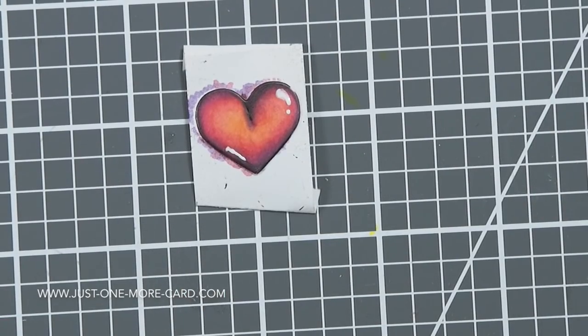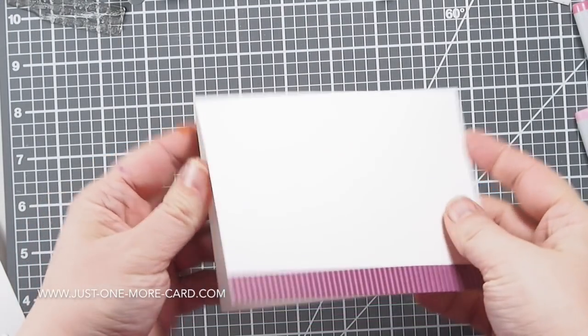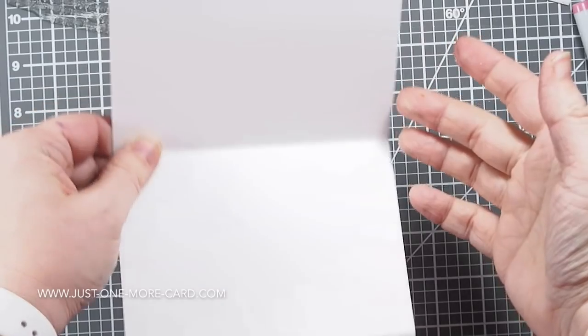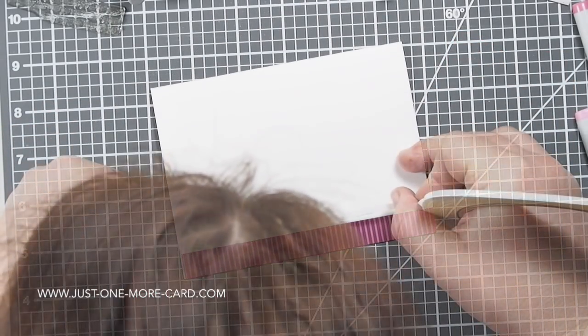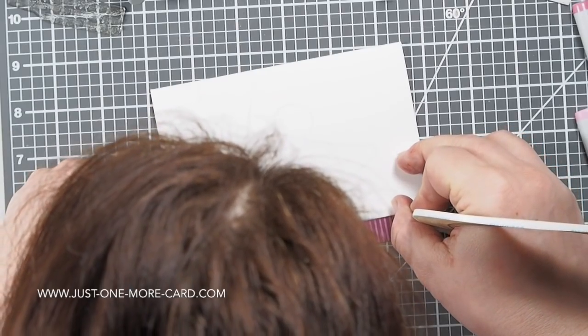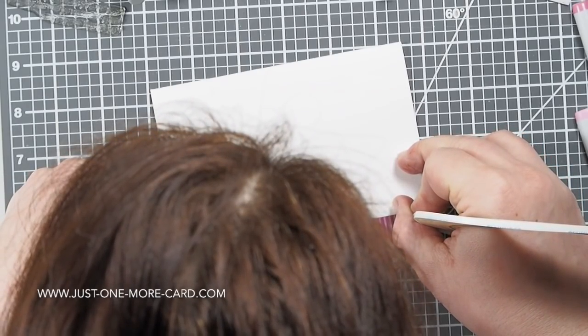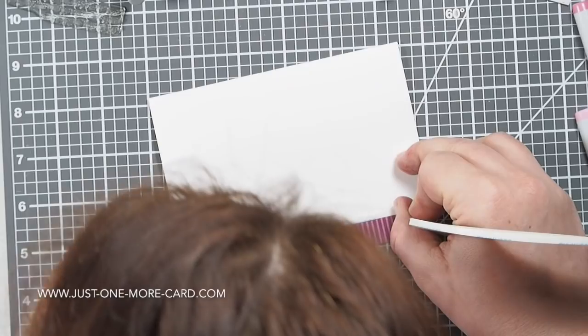Now for my card base, I have a standard A2 size card base, like US size A2. I applied a piece of pattern paper to the bottom, and sorry for my head getting in the way. I have this—I think it's a quarter inch, no that's not a quarter, it's one-eighth of an inch double-sided adhesive tape.